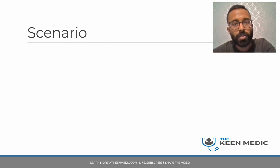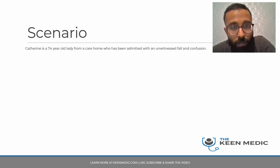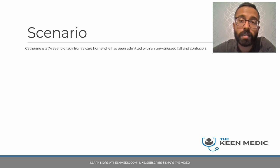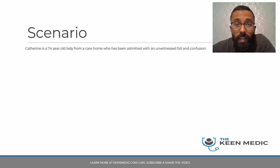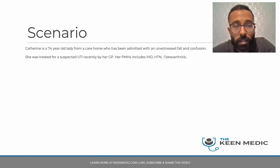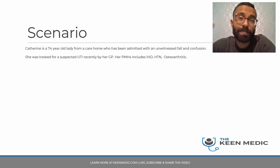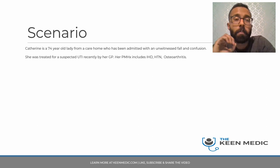Here's the scenario: Catherine is a 74-year-old lady from a care home who has been admitted to A&E with an unwitnessed fall and confusion. This is a very common scenario - little old ladies from care homes get admitted to hospitals all the time. She was treated for a suspected urinary tract infection recently by her GP, and her past medical history includes ischemic heart disease, hypertension, and osteoarthritis.